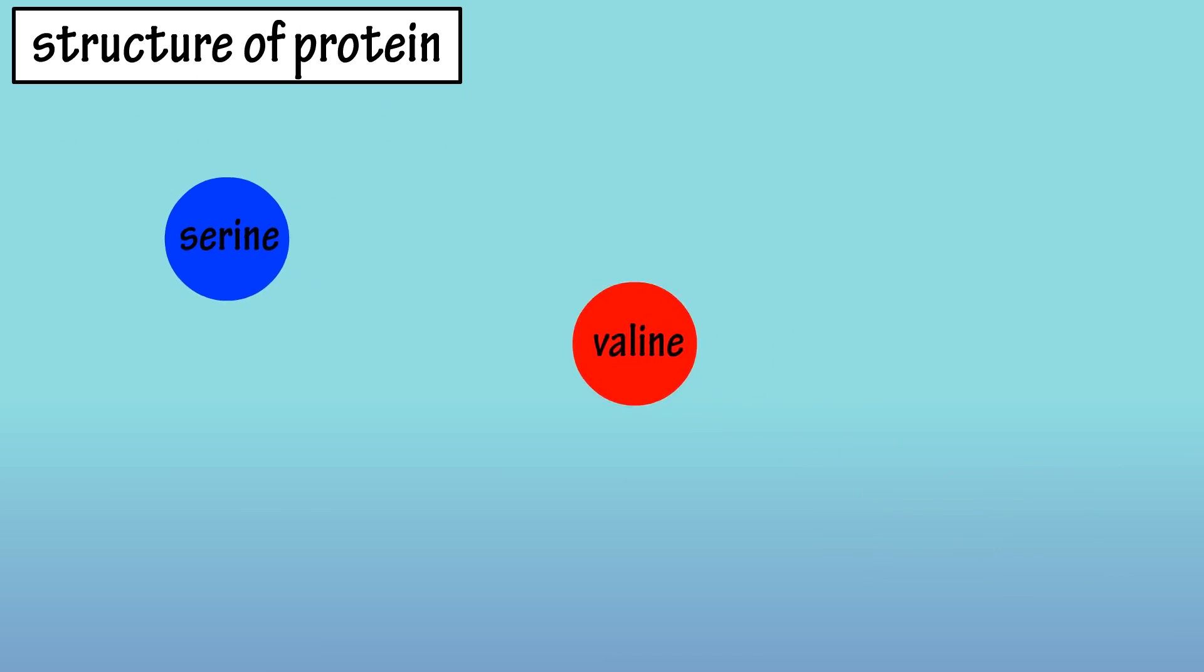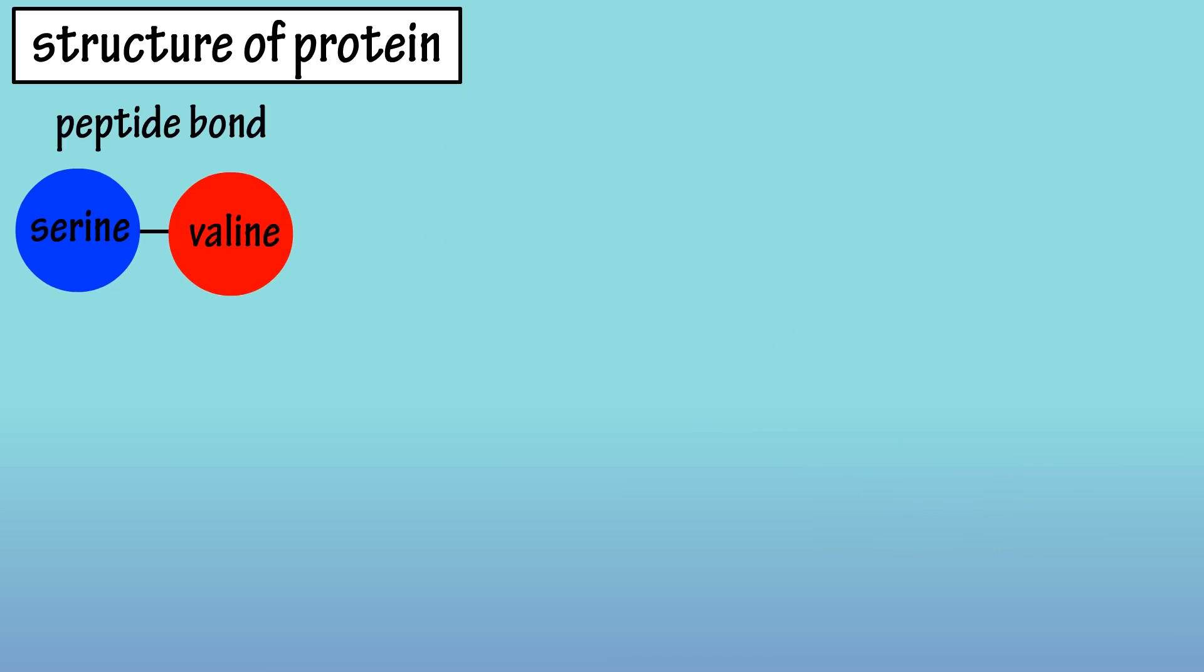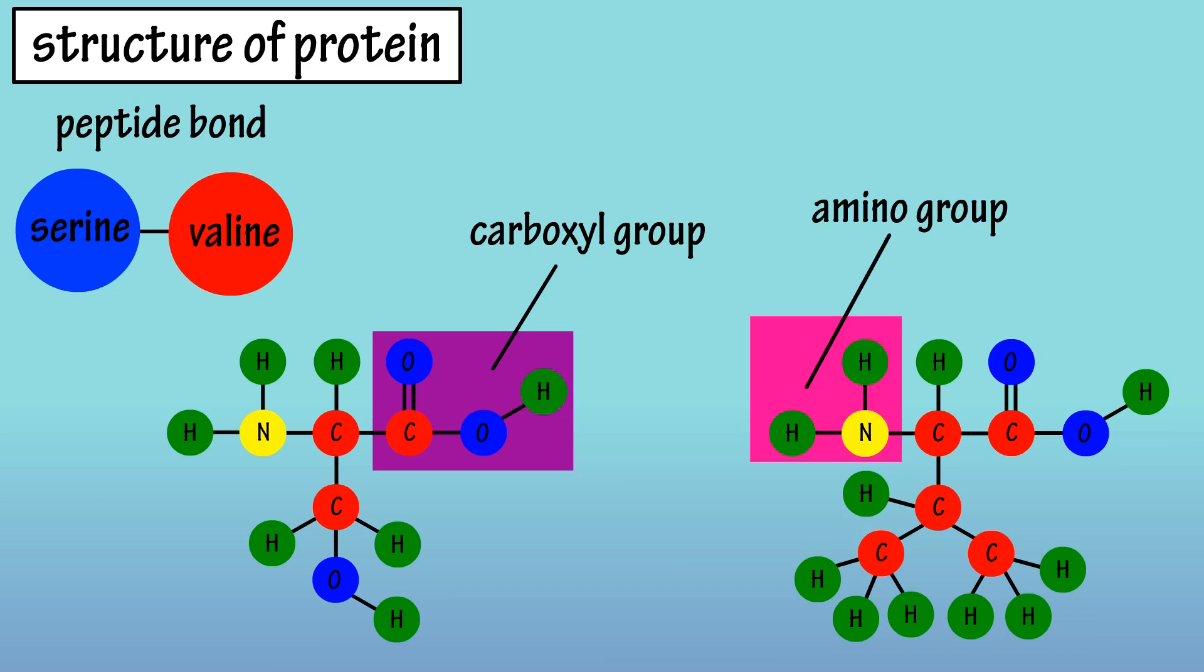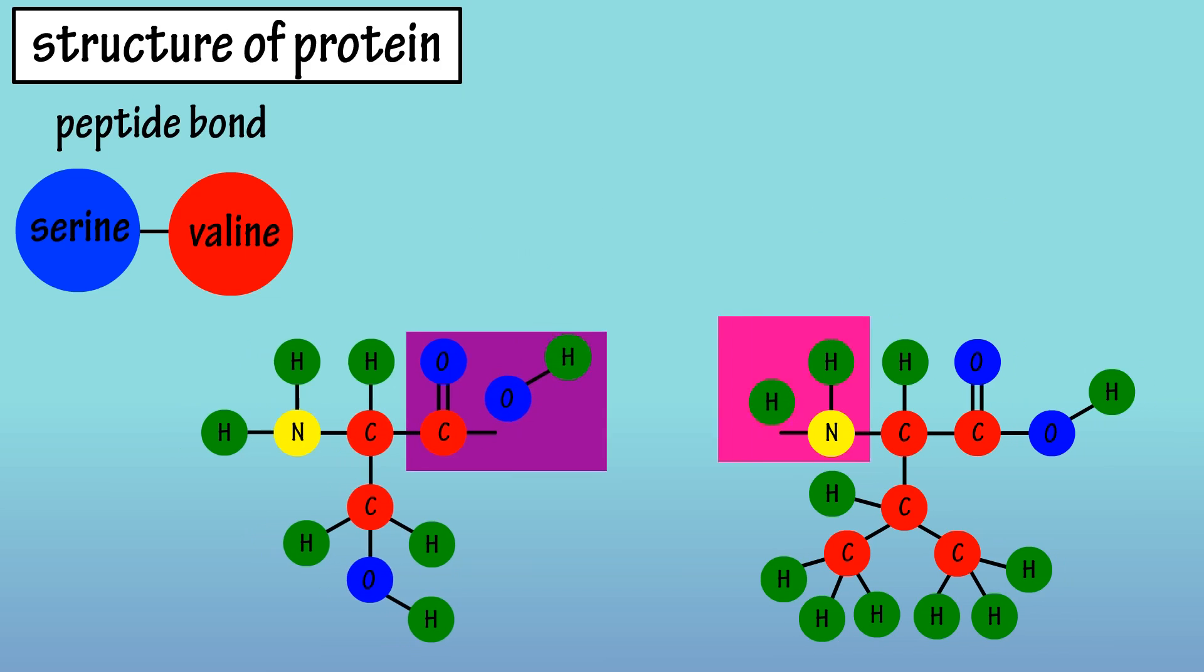When two amino acids join together, they form what is called a peptide bond. A peptide bond is when the carboxyl, or carbon-oxygen-oxygen-hydrogen group of one amino acid, bonds with the amino, or nitrogen-hydrogen-hydrogen group, of another amino acid.